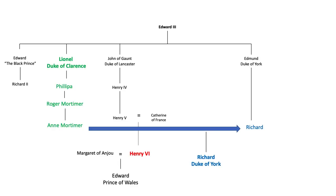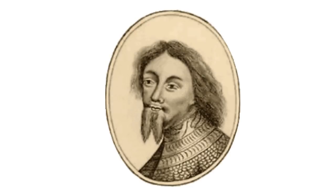Meanwhile, the descendants of Edward III's second and fourth sons had ultimately married, and their child, Richard, Duke of York, headed up the House of York. Richard of York also believed that Henry was a poor king, under the influence of a small clique of nobles who were on the make, and secondly that he had a stronger claim to the throne. Initially he seems to have simply wanted the removal of the clique advising the king, but over time this turned into a greater ambition: to wear the crown himself.